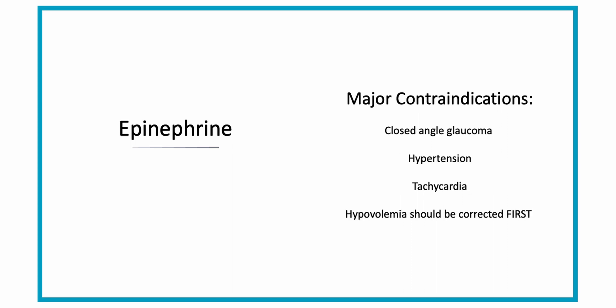Major contraindications for epinephrine are closed-angle glaucoma because it will constrict the pupils, hypertension because it will further increase blood pressure, and tachycardia because it can further increase the heart rate. Hypovolemia should be corrected before epinephrine is given.